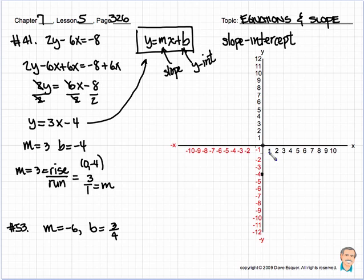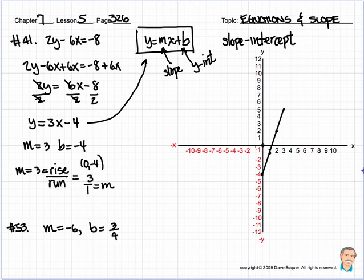So let's rise up 3 — 1, 2, 3 — let's run over 1, and let's make a dot. Let's rise up 3 — 1, 2, 3 — let's run over 1, let's make a dot. Let's rise 1, 2, 3 — let's run over 1, let's make a dot. Hey, that's what our equation looks like. Let's get our ruler. Let's connect the dots. See if we can do something that looks like that. There's our graph.